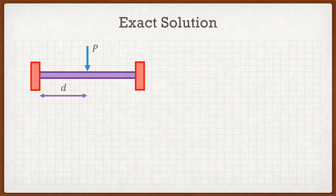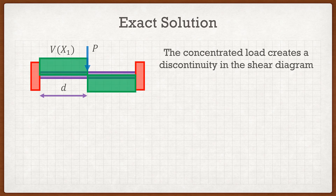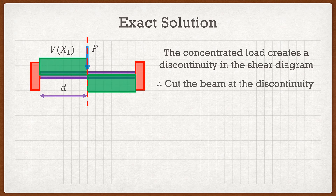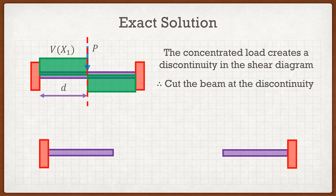If we look at the shear diagram of this beam, we can easily see the discontinuity. On the left side of the point load we have a positive shear region, and after the point load P it transitions into a negative shear region. The shear force is a piecewise function — it's not continuous — and this is what creates the problem. So in order to account for this, we are going to cut the beam at the location of that point load, which effectively gives us two different beams.